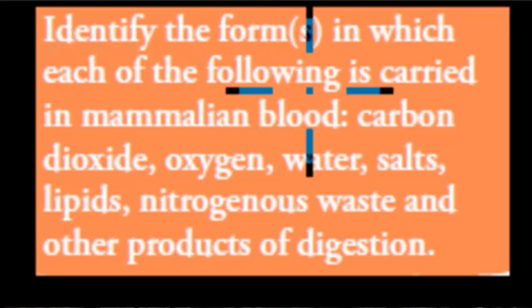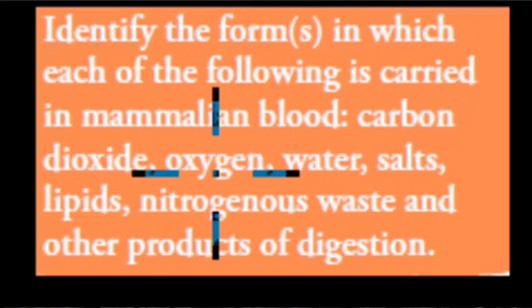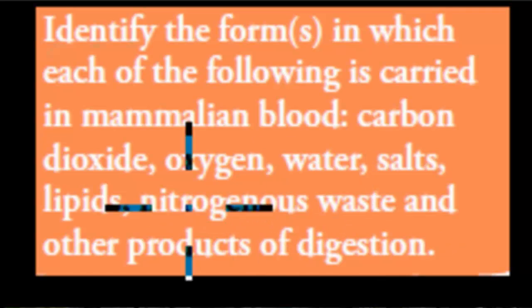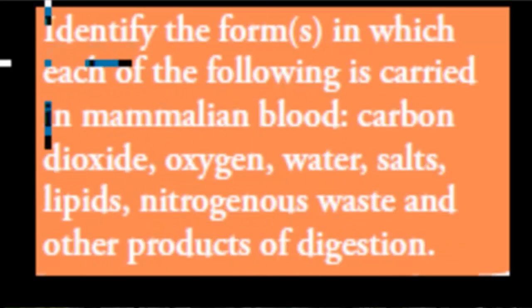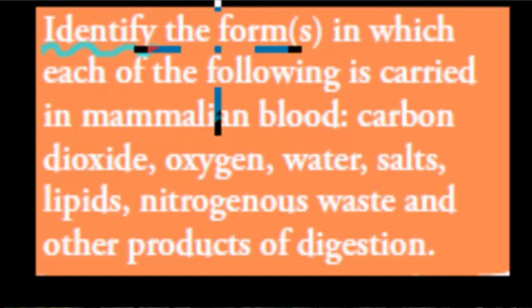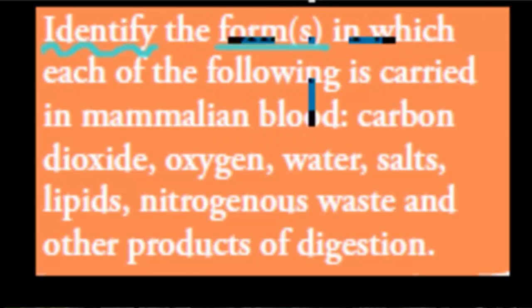The stop point says: identify the forms in which each of the following is carried in mammalian blood — carbon dioxide, oxygen, water, salts, lipids, nitrogenous waste, and other products of digestion. The verb is 'identify', which means it's straightforward — we just have to name the forms. That 'S' is important because for some, there's more than one form.